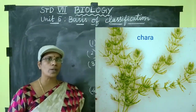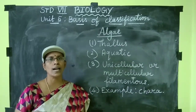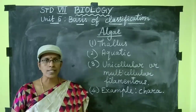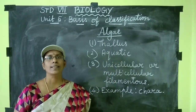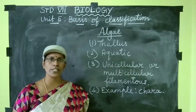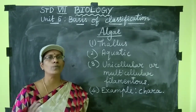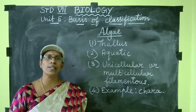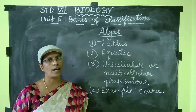The filamentous plant body is elongated and thread-like in structure. To summarize algae: the plant body is a thallus — not well differentiated into true root, stem, and leaves — they live in water and are predominantly aquatic. They are unicellular or multicellular filamentous. Example: Chara.